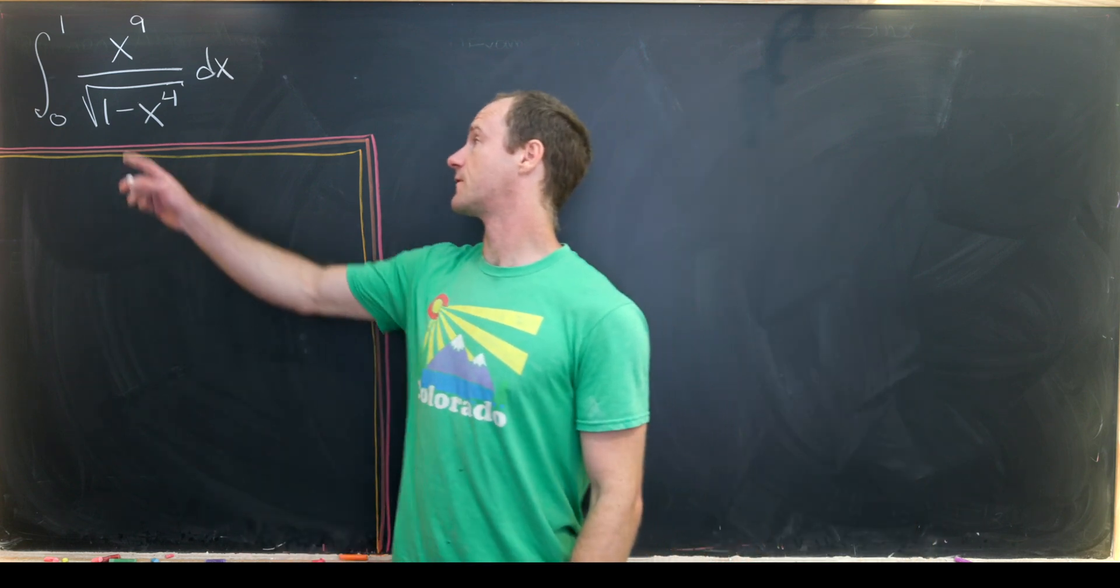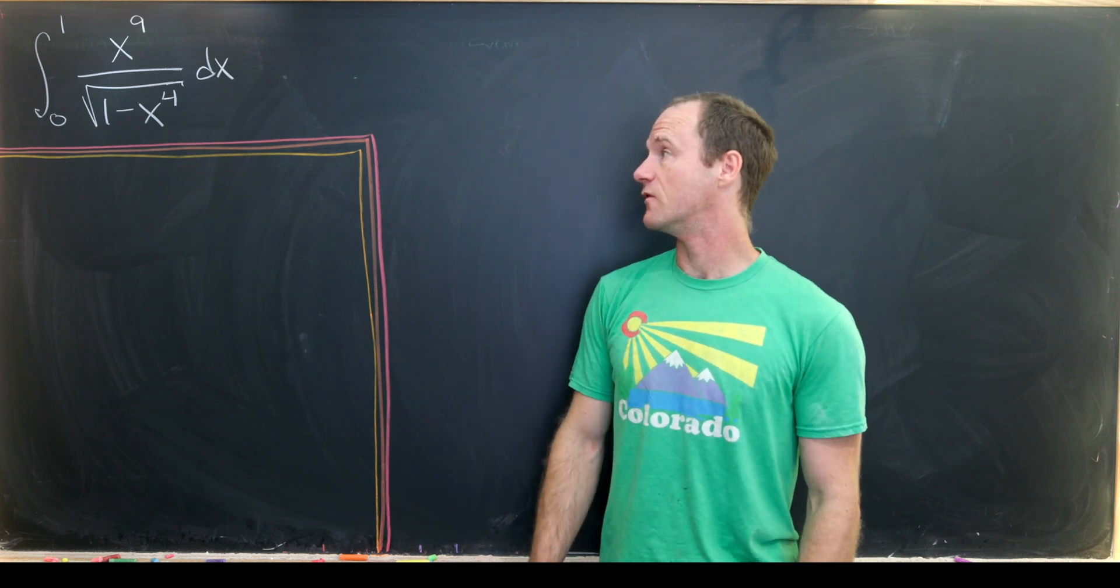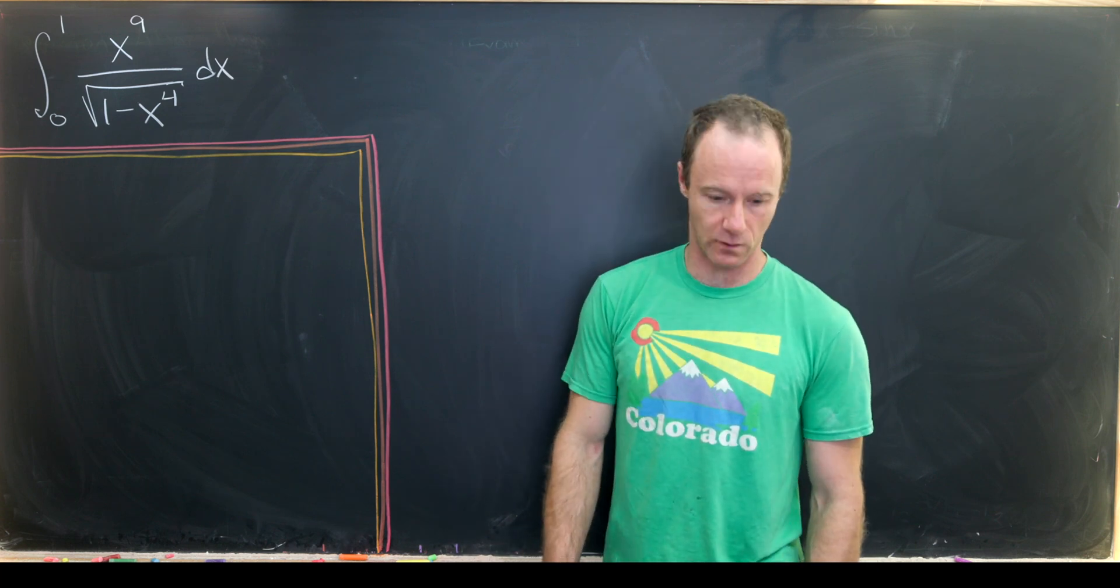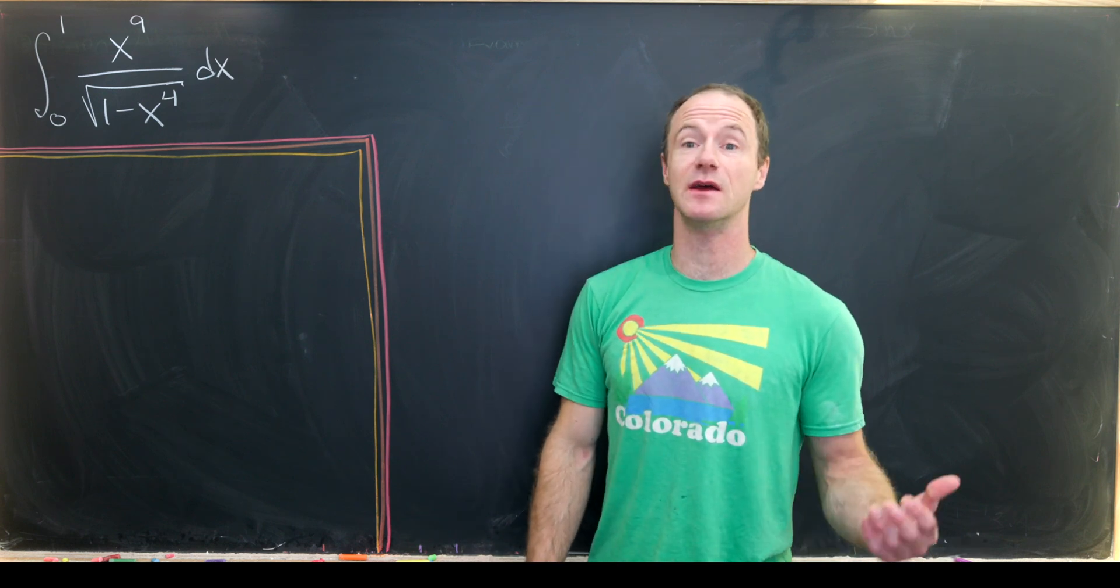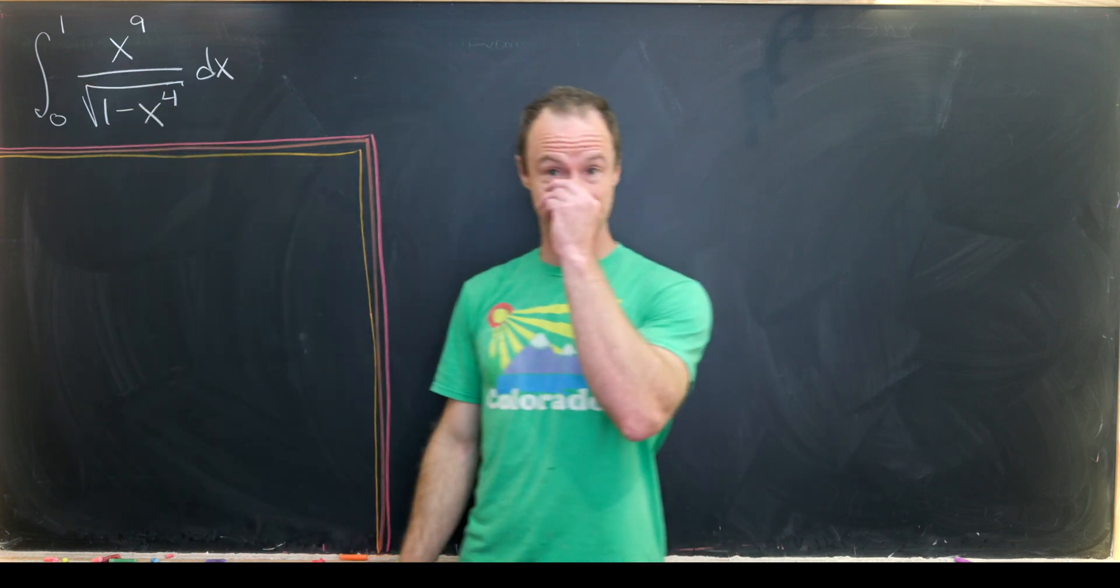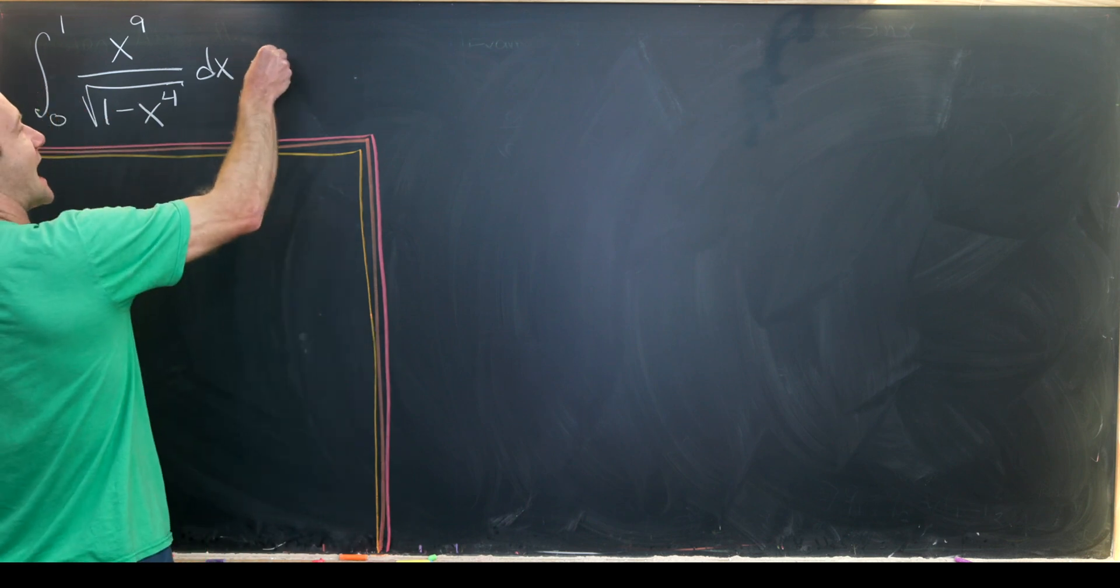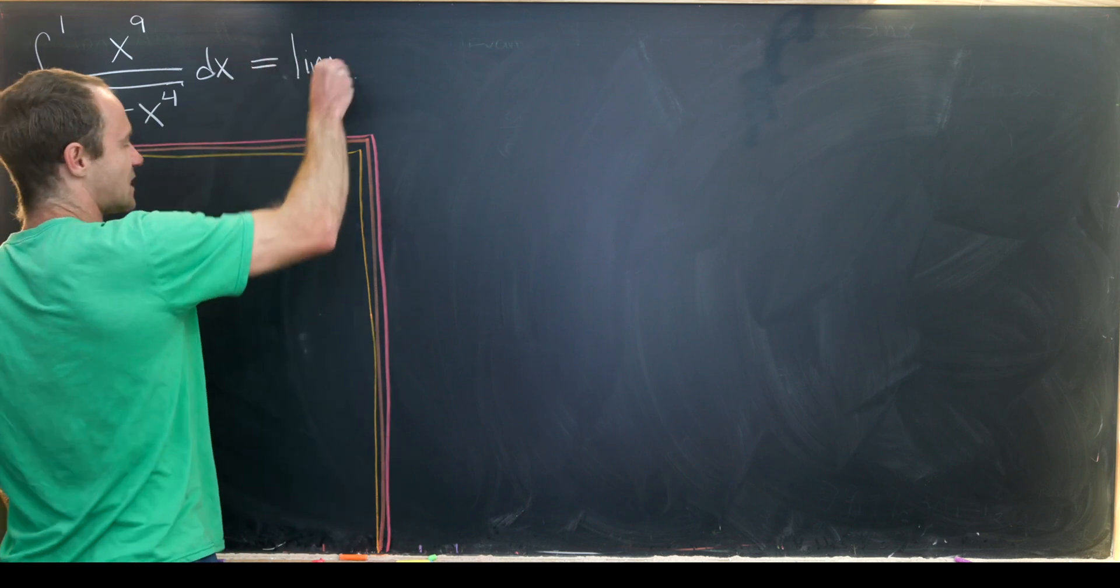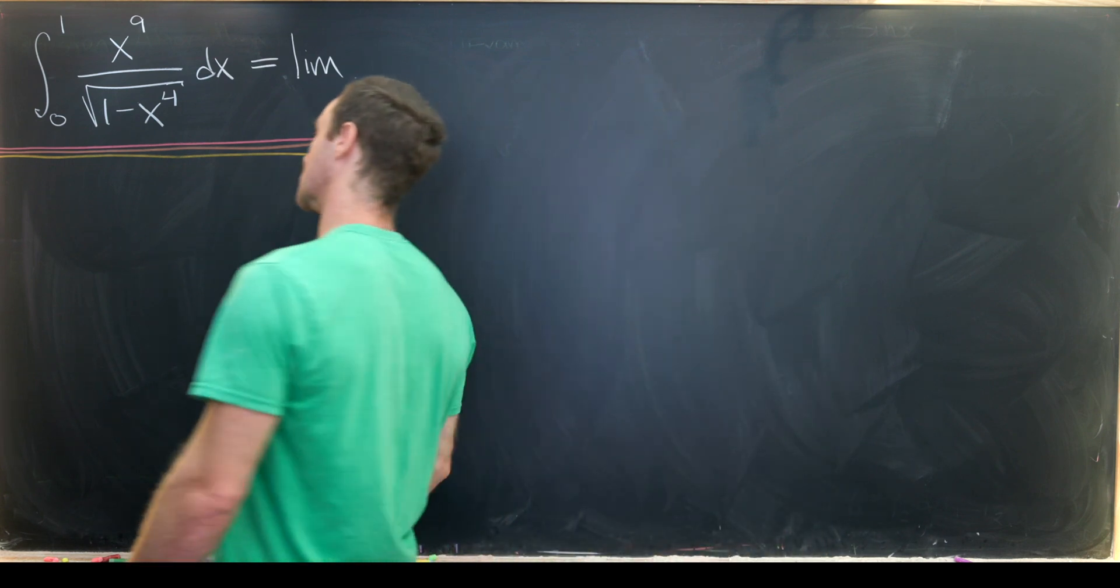We have the integral from 0 to 1 of x^9 over the square root of 1 - x^4. The first thing to notice is that this is an improper integral. If we let x tend towards 1, we get 0 in the denominator. So technically we need to set this up as a limit.